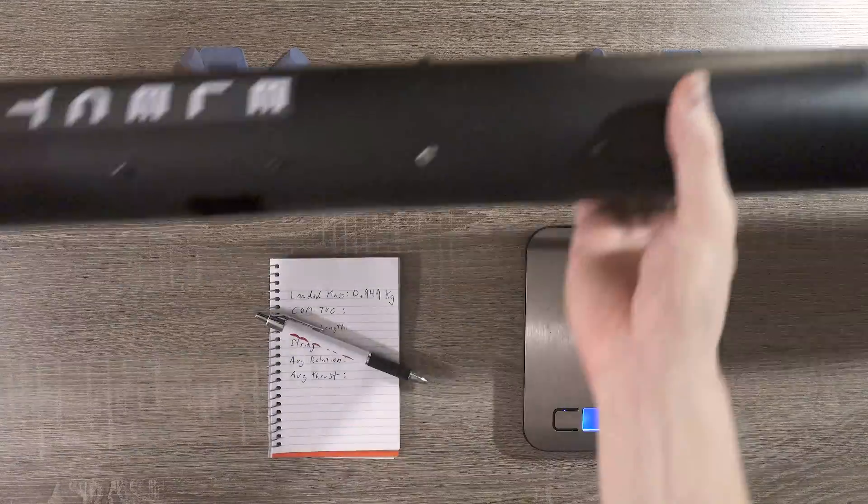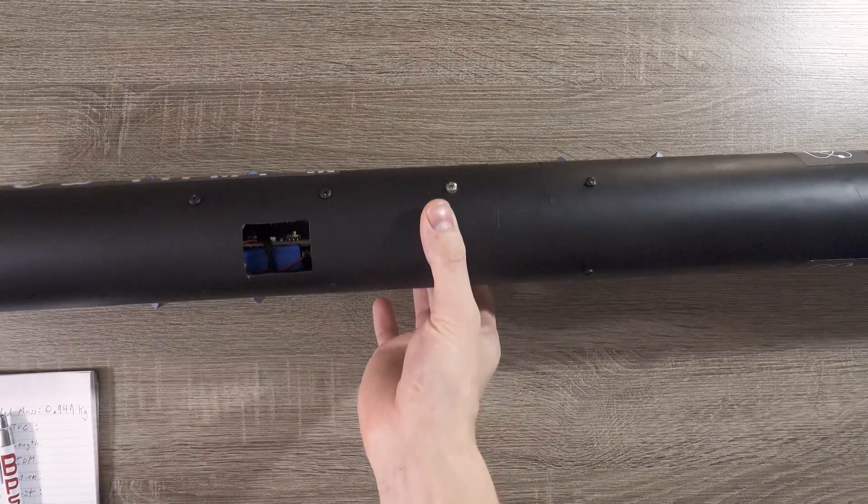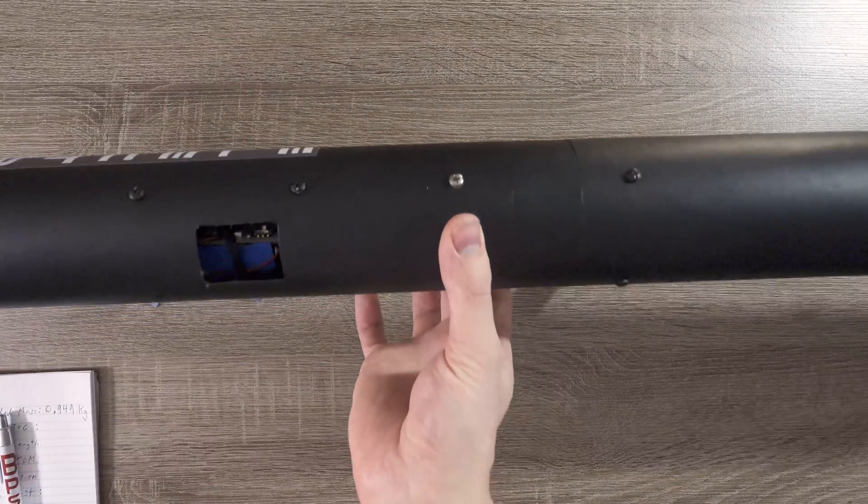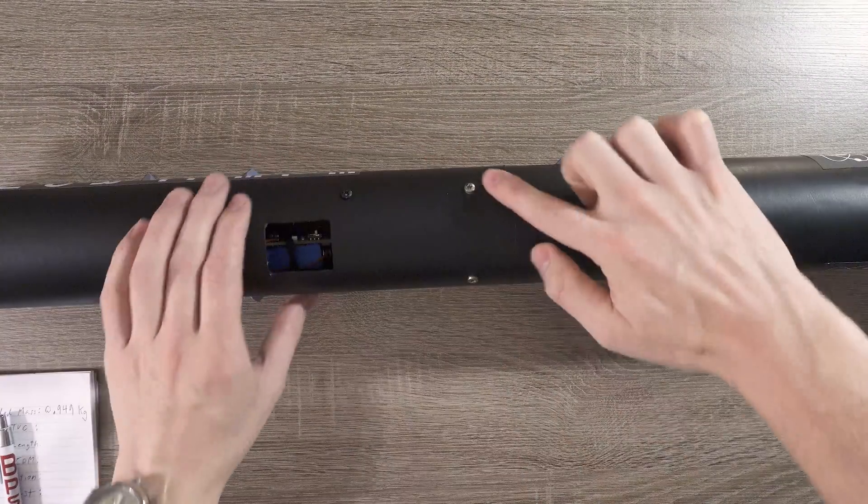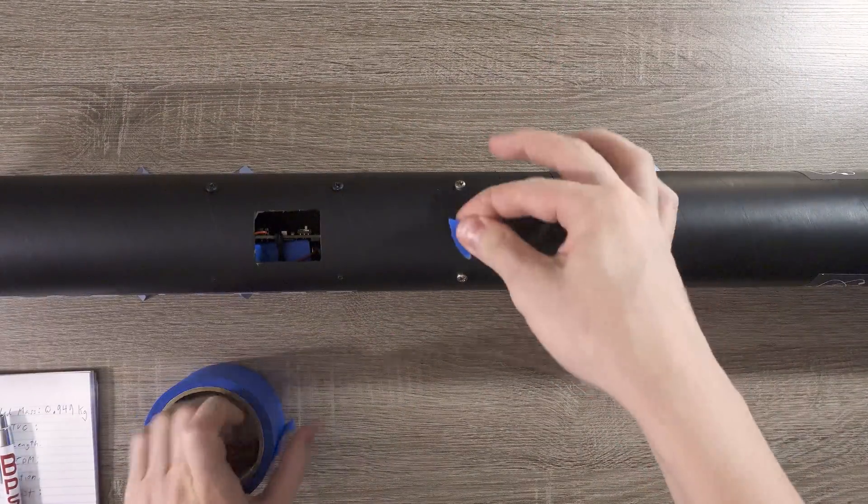Next, let's find the rocket's center of mass, sometimes called the center of gravity. I'll try to balance the rocket on one hand, and wherever I'm able to do that is the center of mass. In this case, it's conveniently right by these two screws. We'll mark the center of mass with a tiny piece of tape.